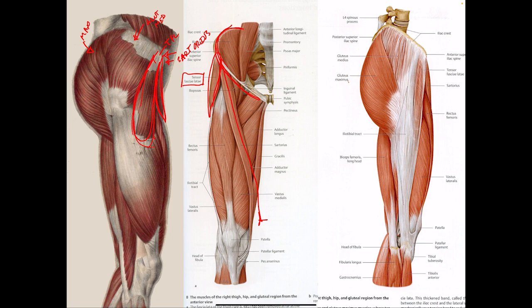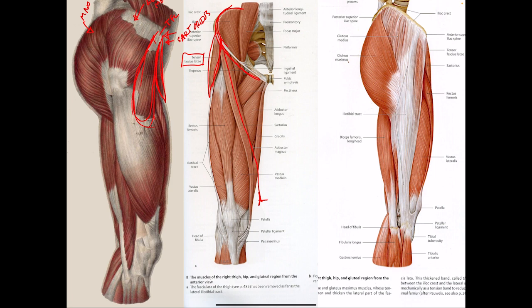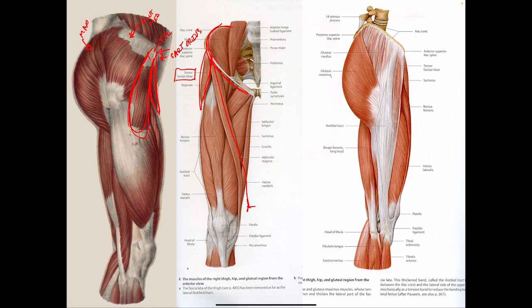Now here's where we get into the nitty-gritty. The leg is divided into two parts by this muscle right here — the front and the back. What are the layman terms for the front and the back? Hamstrings and quads. Your hamstrings are the back muscles; your quads are those front muscles.